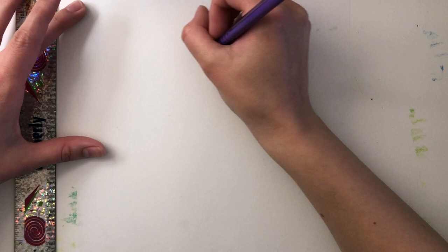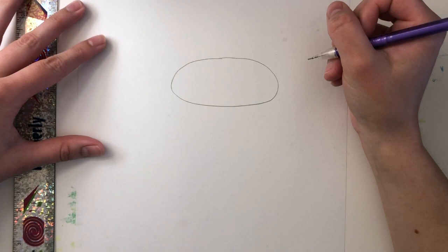To begin you'll need a pencil, eraser, and a ruler. Start by creating an oval for the top of your cake. You can make your cake as big as you'd like.